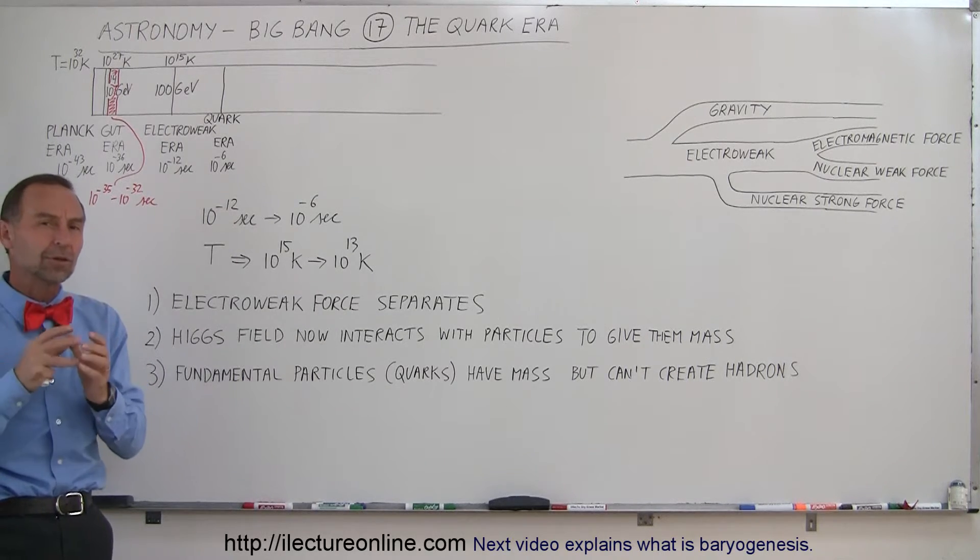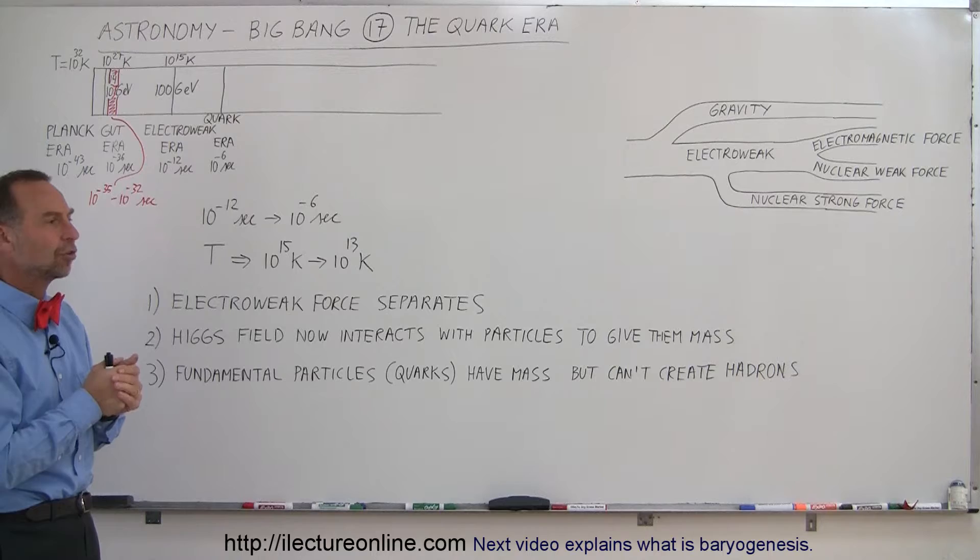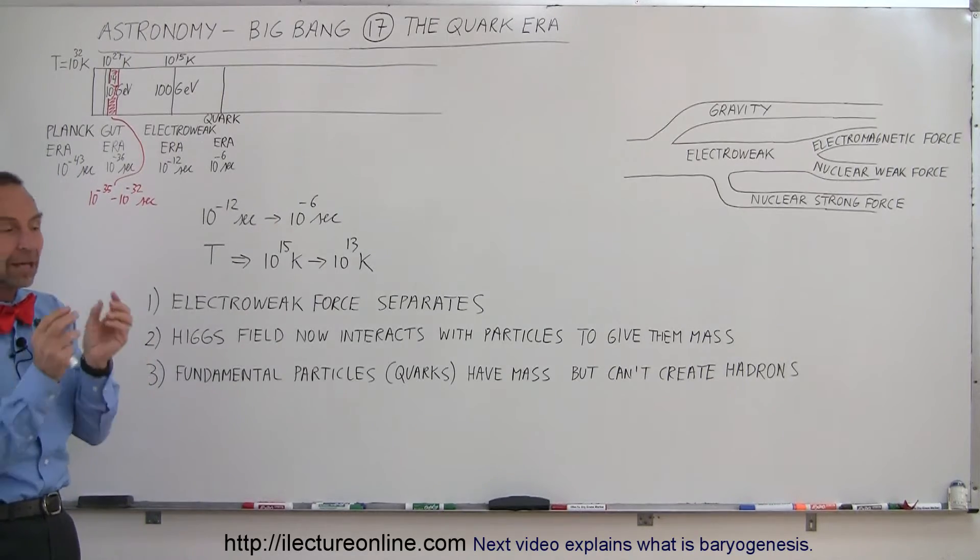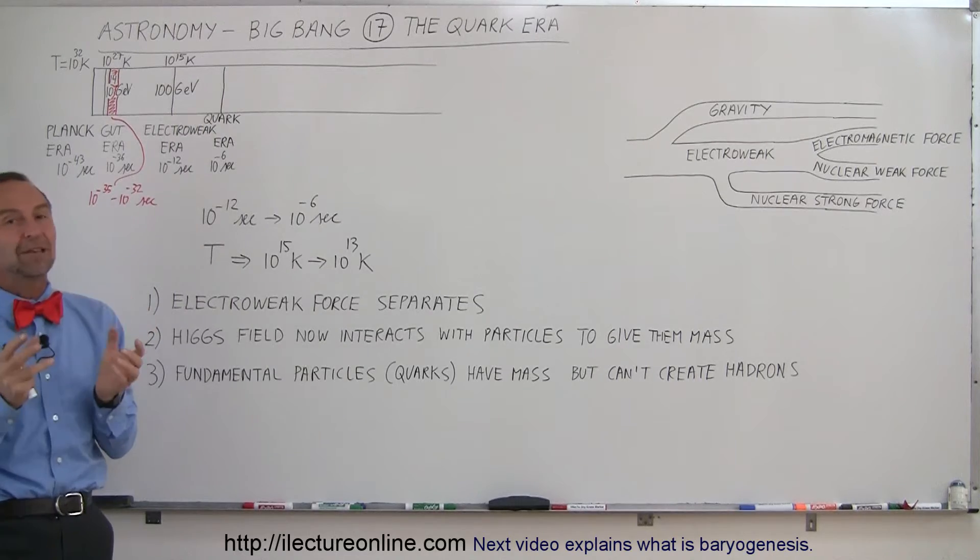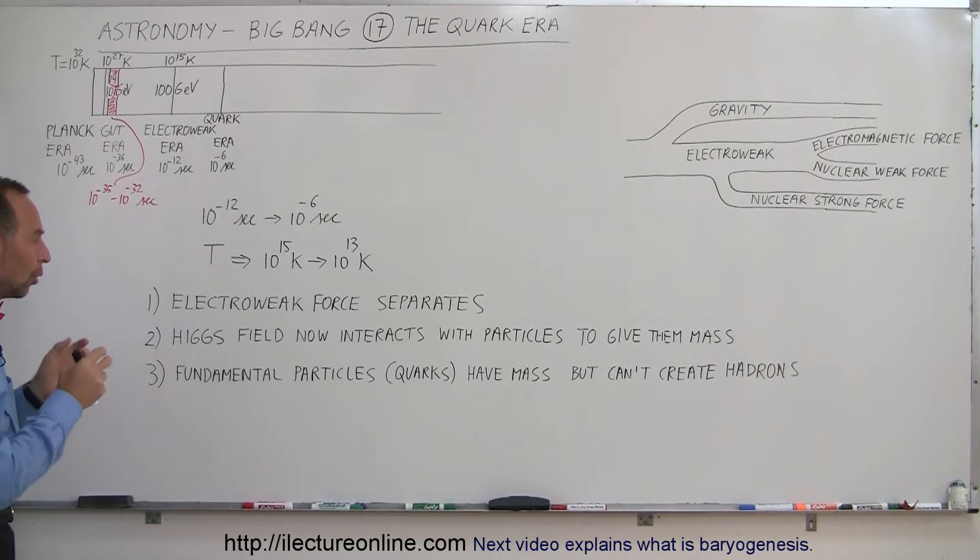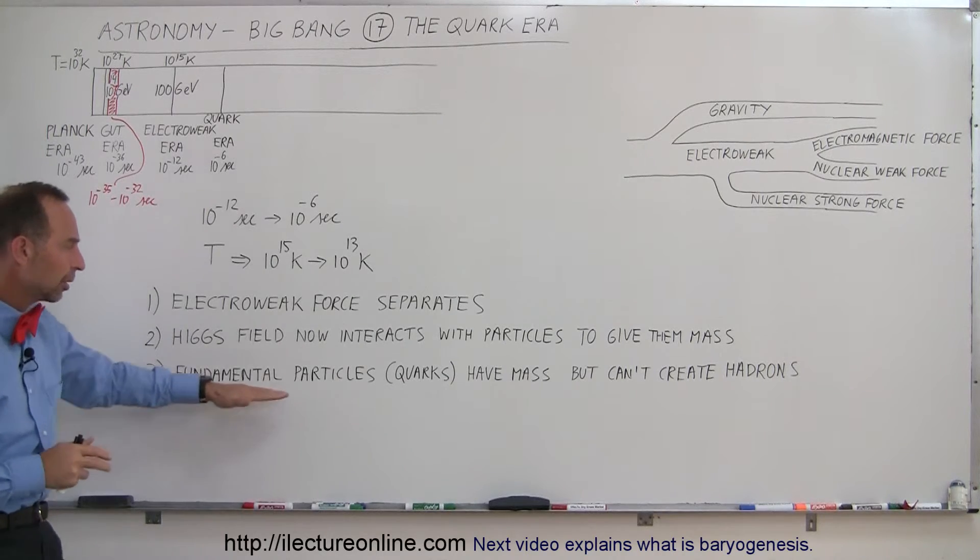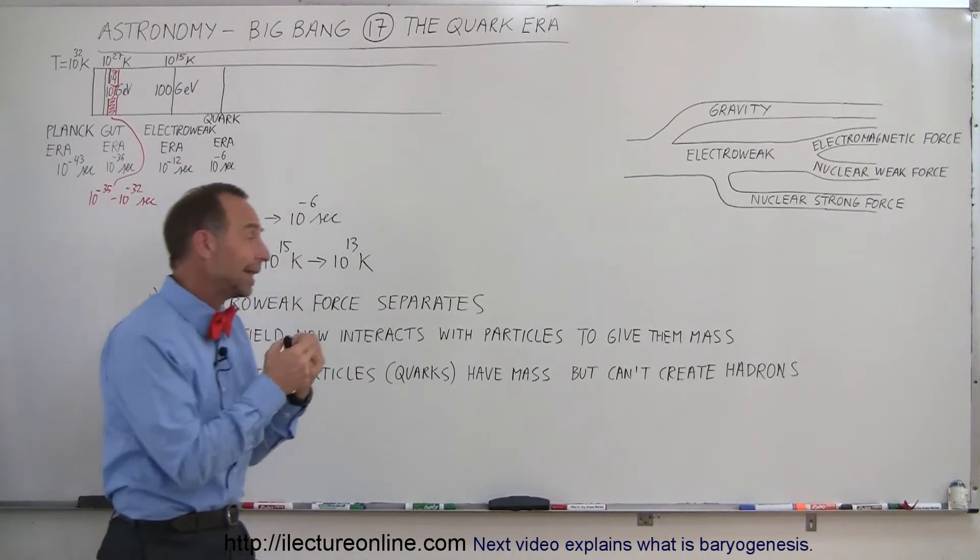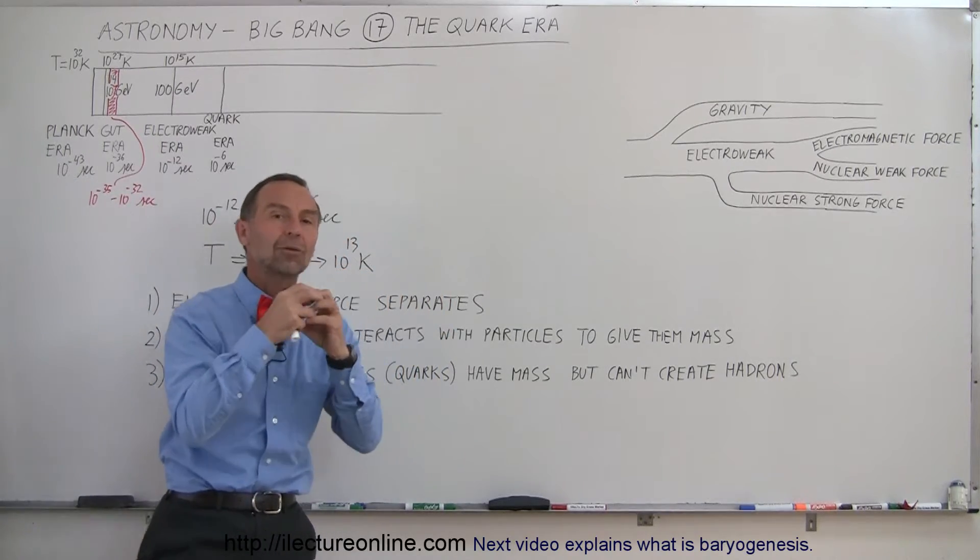Quarks are the basic particles of hadrons. Hadrons are made up of what we call baryons and mesons. Baryons are made of three quarks and mesons are made out of two quarks and we'll get into more detail of that later. So it's still too hot for the fundamental particles, the quarks that now have mass but they're not able yet to create those hadrons.